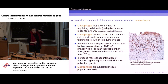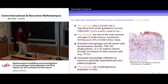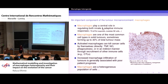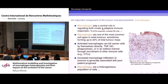We know, and it has been known for a very long time, that activated macrophages can kill cancer cells by themselves directly through the secretion of various factors such as nitric oxide, TNF-alpha, through phagocytosis — they chew the cells — or in an indirect manner through the recruitment of other immune cells, cytotoxic lymphocytes, CD8 cells, and so on.